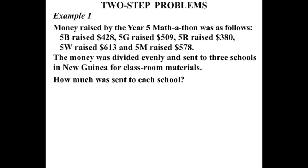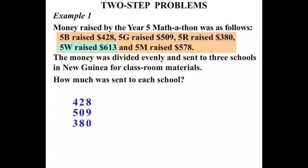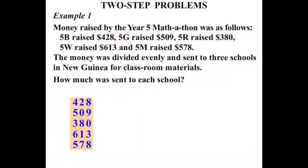There are two steps to this problem. The first step is to work out how much was raised altogether, and we do that by addition. So we have $428, $509, $380, $613, and $578 — all those figures we need to add to find the total.